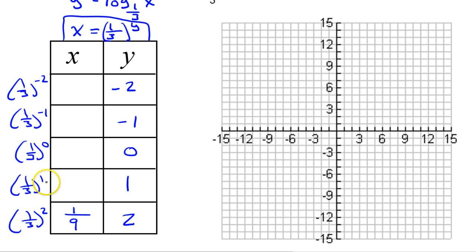Anything to the first power is just itself. Anything to the 0 power is 1, and then the next two will be the reciprocals of these two. So this is 1/3, so the reciprocal of that is 3. This is 1/9, so this will be 9.